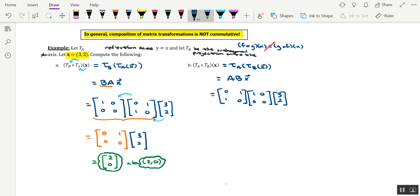Again, you have a couple of routes you can take. You can first multiply the vector x to the matrix B. That would be a projection output vector. And then you could take that output vector and treat it as an input vector for the transformation T sub A. Or alternatively, which is the route I tend to gravitate towards, you can multiply the two standard matrices out.